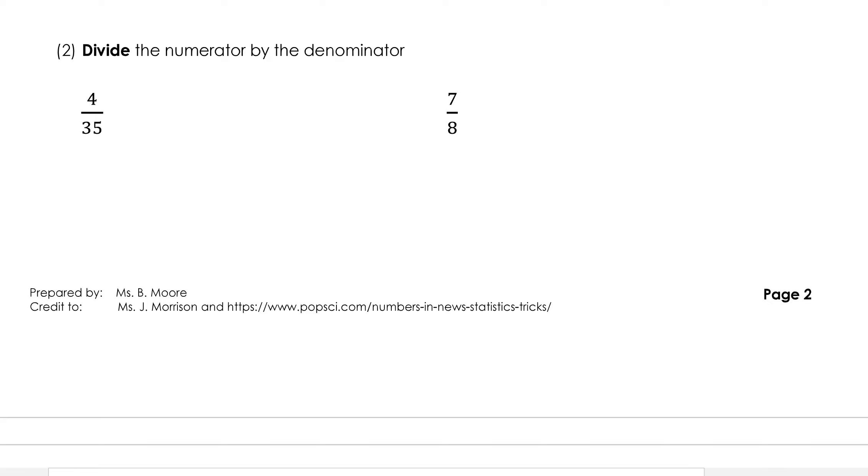When we don't have a nice denominator that can be converted into 10, 100, or 1000, we can divide the numerator by the denominator. Now, you can do this manually using long division, or if you have a calculator, you can use that. Let's do the first one together. This means 4 divided by 35. If we did this in long division, we would put 35 on the outside, and 4 on the inside.